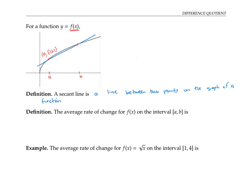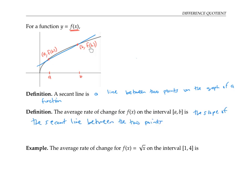The second point will have x value b and y value f of b. Now the average rate of change for a function on the interval from a to b can be defined as the slope of the secant line between the two points (a, f of a) and (b, f of b).